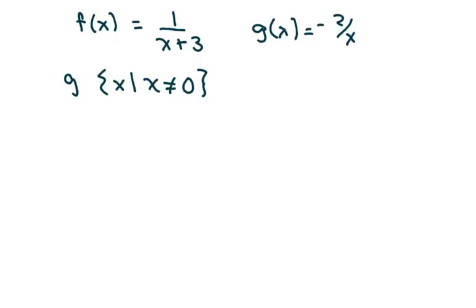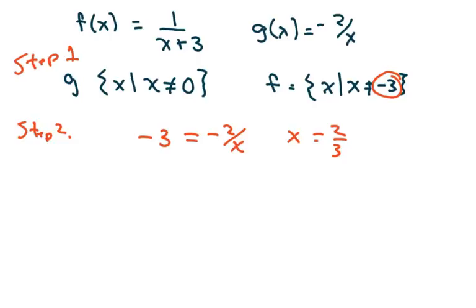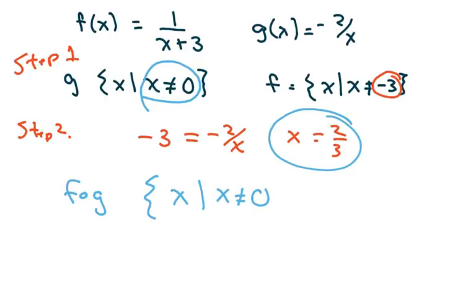The domain of f — we find this so we can set g of x equal to that restricted value. The domain of f is all real numbers but x cannot be negative 3. So you set g of x equal to negative 3, cross multiply, and you get x equals 2 thirds. Therefore the domain of f of g is x such that x cannot be 0 and x cannot be 2 thirds.